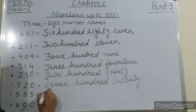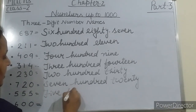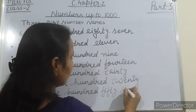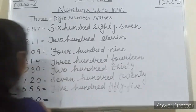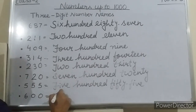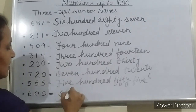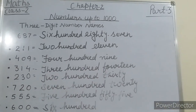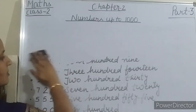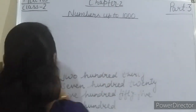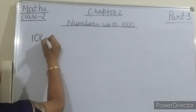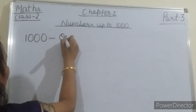Now, 555 — five hundred fifty-five. And here it is 600 — six hundred. All right. So the name of the number 1000 is one thousand. How will you write thousand? It will be one thousand.